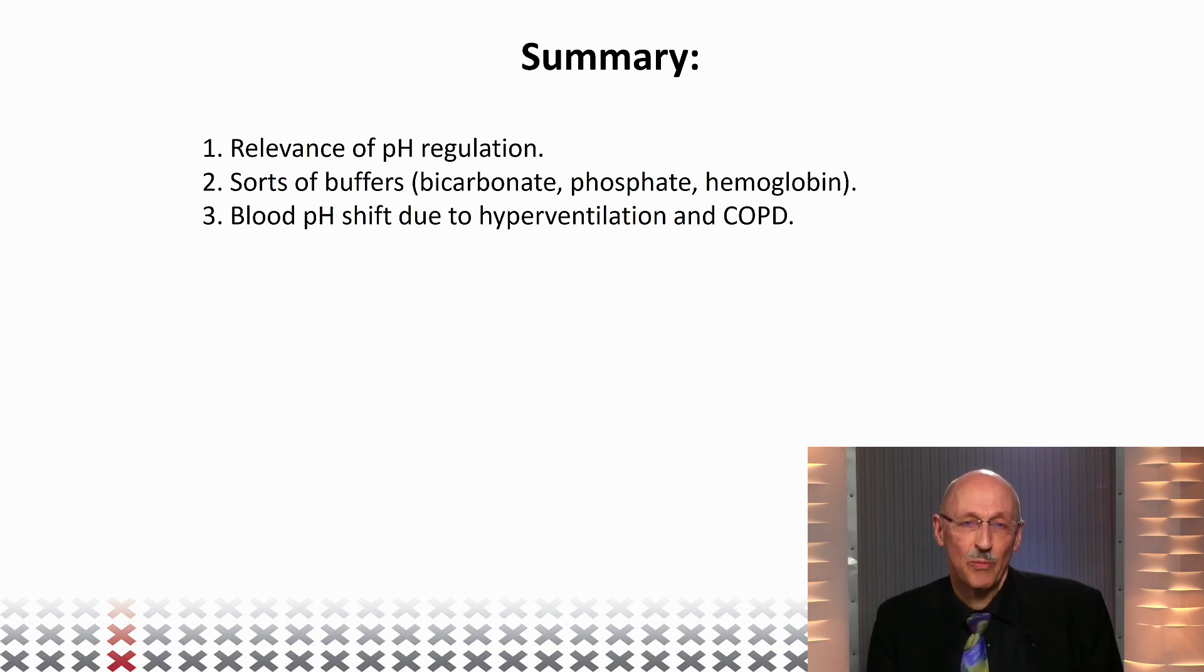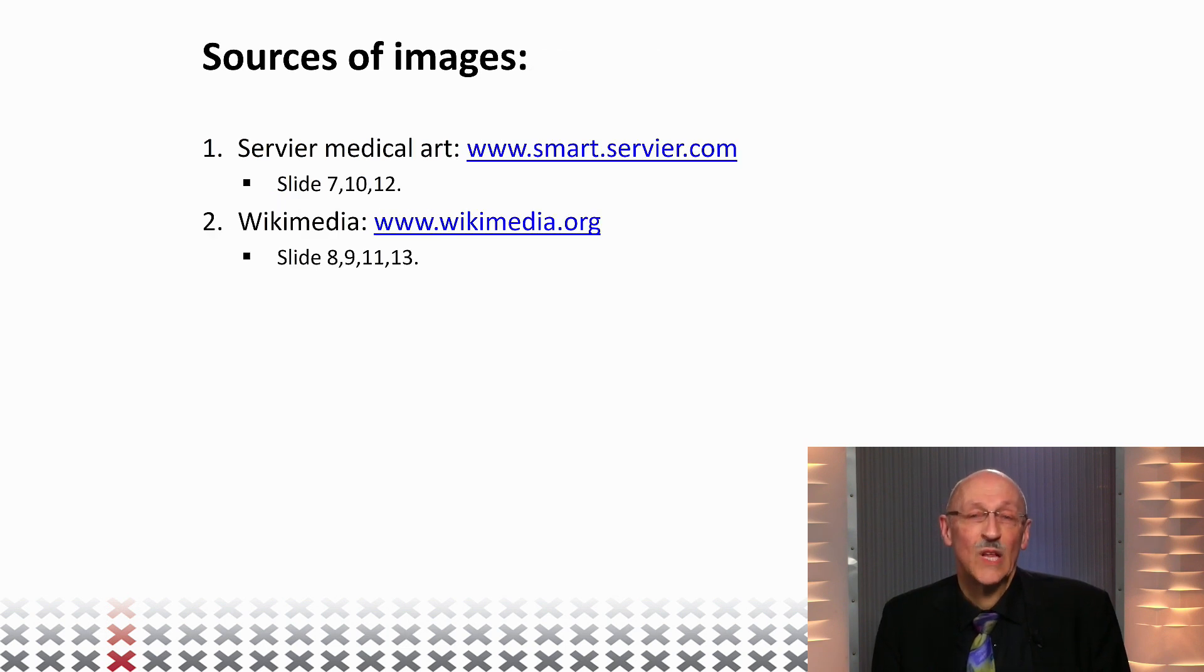So we talked about the relevance of pH regulation. It's all about optimal functioning of enzymes. We talked about the sorts of buffers that the blood has to take care of all these kinds of problems. And we showed that the CO2 bicarbonate buffer is the most important one by far. And we gave you brief examples of shifts in blood pH due to hyperventilation and COPD. I hope that you are so interested that you will also check out the next two lectures. Thank you for your attention.